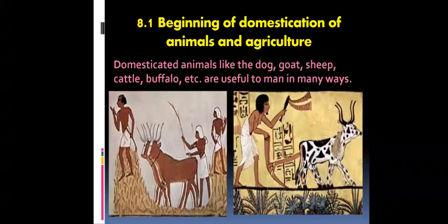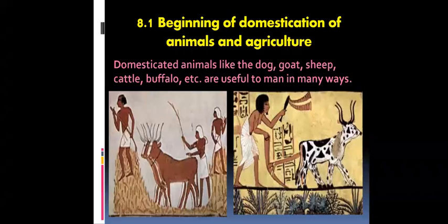As we have already seen in our sixth lesson, the dog was domesticated in the Middle Stone Age — the dog is the first animal to have been domesticated. Dogs were used to help with hunting. The goat and the sheep were domesticated next, so the first was the dog, then came the goat and the sheep.